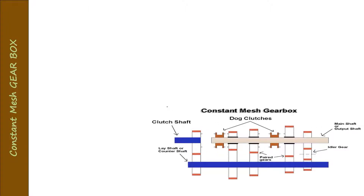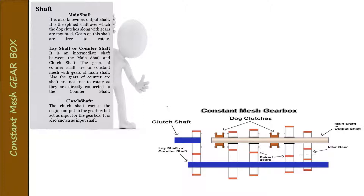Now the main parts of the constant mesh gearbox. There are three types of shaft: the main shaft, the lay shaft or counter shaft, and the clutch shaft. The main shaft is also known as the output shaft. It is a splined shaft over which the dog clutches along with gears are mounted. The gears on this shaft are free to rotate.